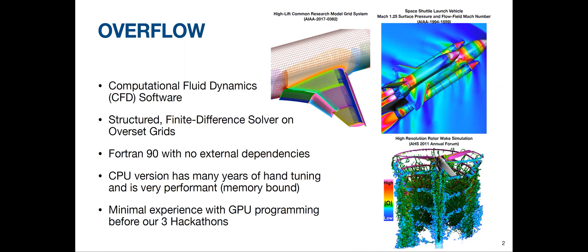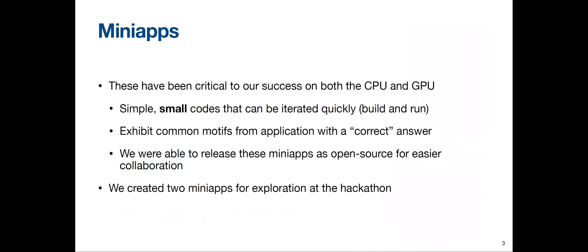Before we started our hackathon, we had minimal experience using GPUs, but we did have a fair amount of experience profiling our code on the CPU side. The first thing we did in preparation was create mini apps, which have been critical for our success on the GPU and have even helped us on the CPU side. These mini apps are simple, small codes — emphasis on small — so that we can iterate on them quickly: make changes, update things, profile, build, and run a problem quickly. They exhibit common motifs from our overall application overflow, and we have a correct answer to verify that modifications only affect performance, not the algorithm or final solution.